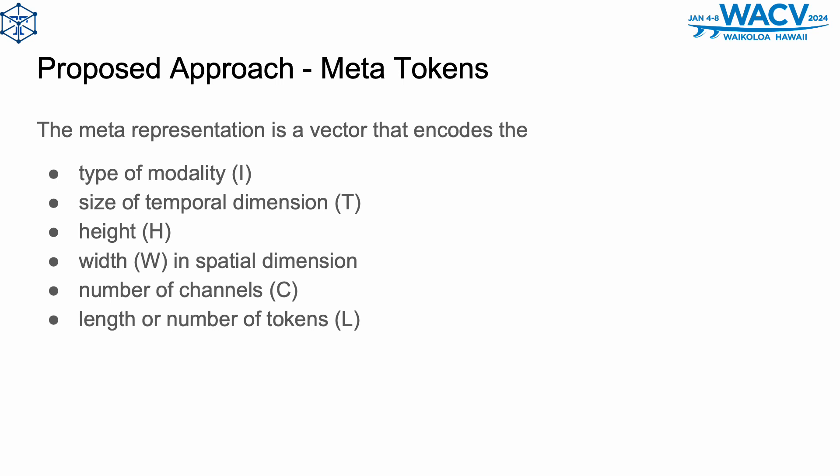Along with encoding the modalities, we also extract meta tokens from the input modalities. This meta representation is a vector that encodes the modality type, the size of the temporal dimension in the case of audio or video, the height and width of the spatial dimension if applicable, and the number of channels and length or number of tokens in the case of text. In general, the meta tokens can also hold additional information to make the framework adapt to additional modalities. The value in each of these representation variables is conditioned on the type of modality. For example, non-spatial data may have height and width set as a special token denoting lack of such information.